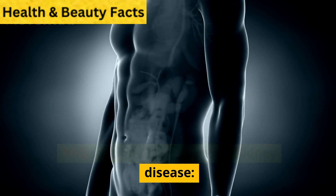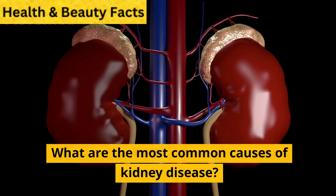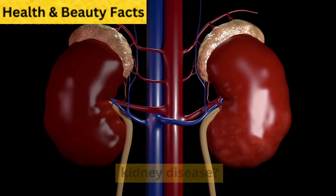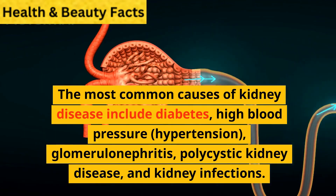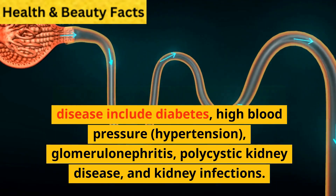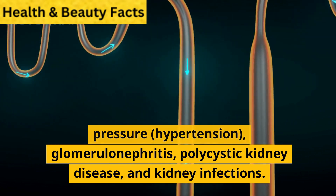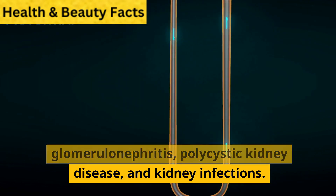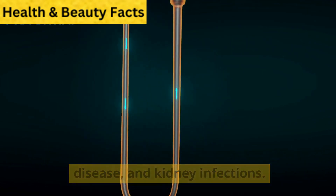FAQ section about types of kidney disease. What are the most common causes of kidney disease? The most common causes of kidney disease include diabetes, high blood pressure, hypertension, glomerulonephritis, polycystic kidney disease, and kidney infections.